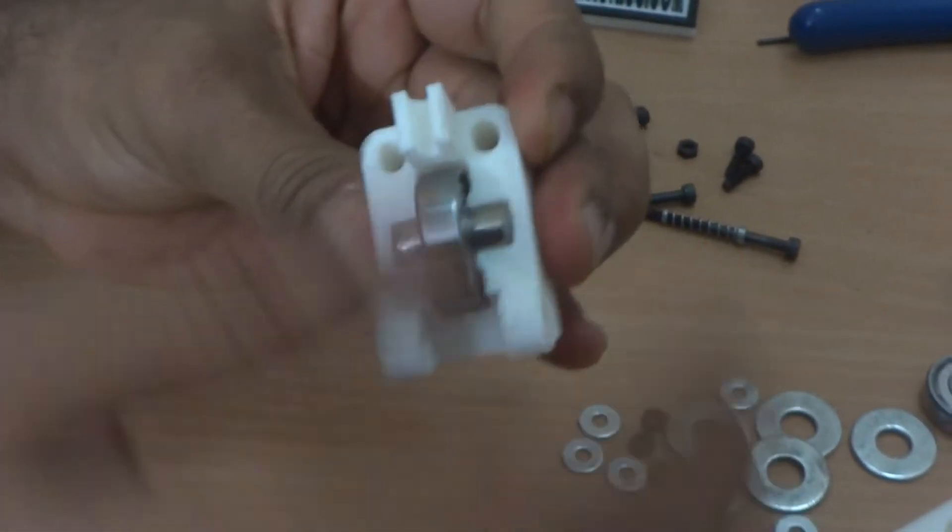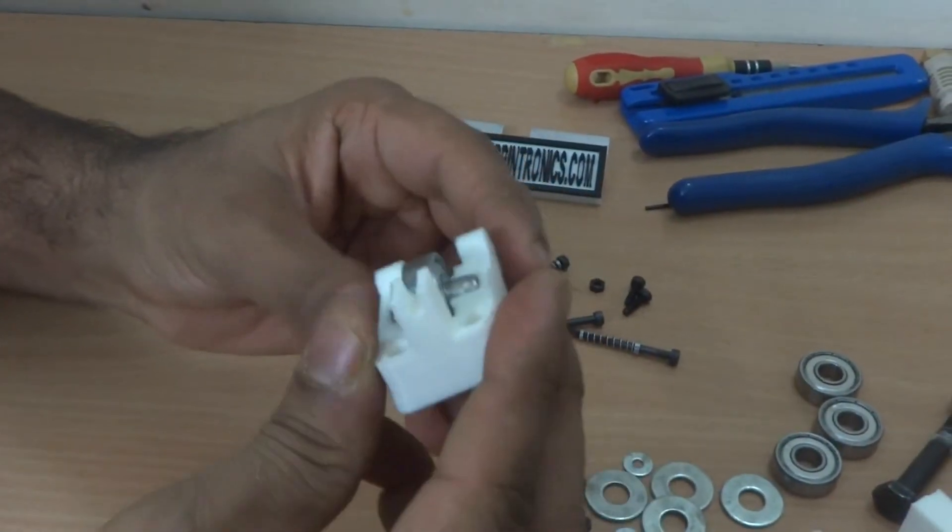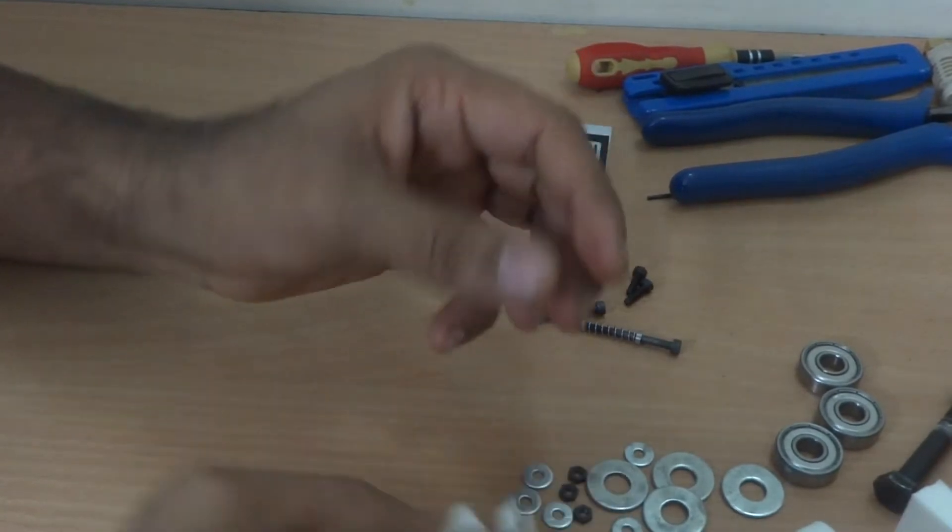Now it is done. It should rotate freely and it should be protruding from here and rotate from here freely like this. So the idler assembly is complete.